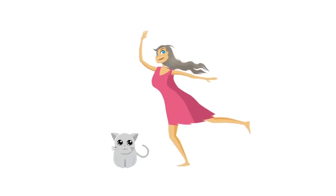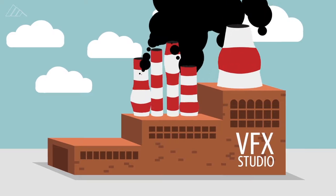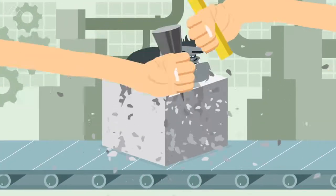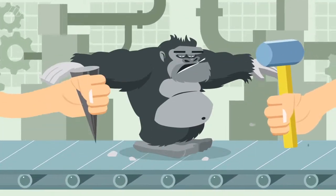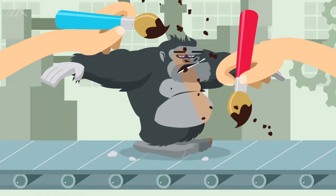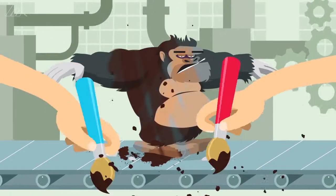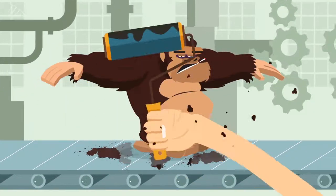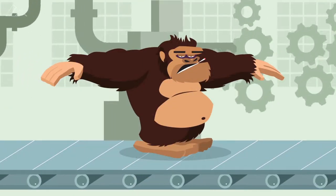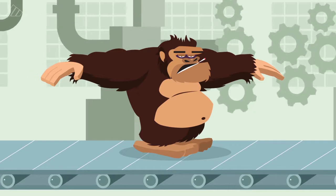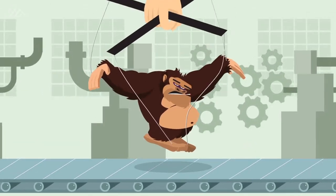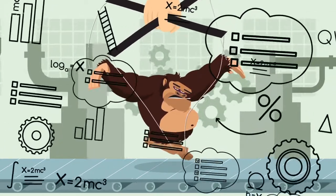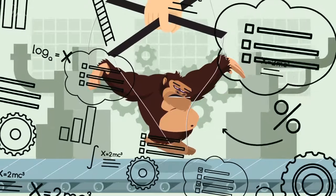Meanwhile, the computer-generated ape is being created by modelers — they're the sculptors, only sitting at a computer. Then the model goes to look development artists, who add texture and coloring to make the sculpture look real. That realistic model then gets sent to rigging, where software engineers build the skeleton and write the scripts that allow the character to start moving.